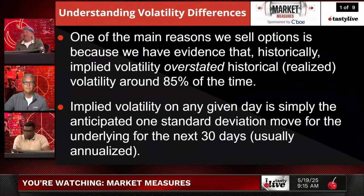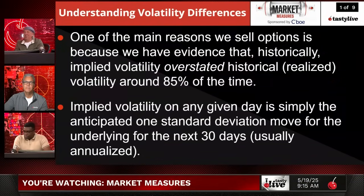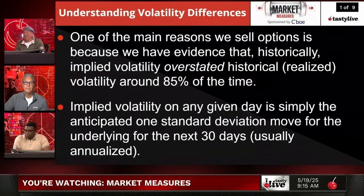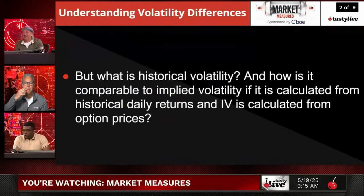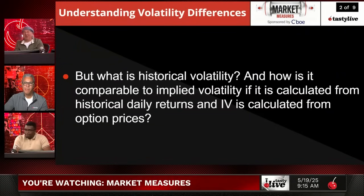Implied volatility on any given day is simply the anticipated one standard deviation move for the underlying for the next 30 days. You can see this on our platform where it says implied volatility.